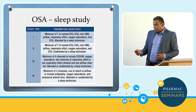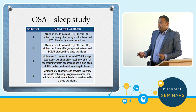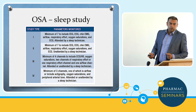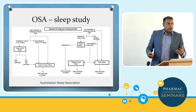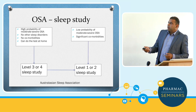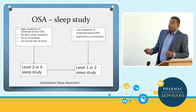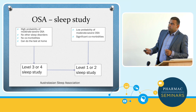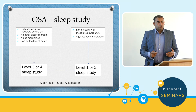Sleep study — we know about level one and level two studies, seven to ten channels typically done in the lab, and level three and four, which are done in the community — patients can do them at home. Looking at the Australasian Sleep Association algorithm, to simplify it: if someone has a high probability of moderate to severe OSA based on questionnaires and history, no cardiovascular problems or other comorbidities, no other sleep disorders, and they can do the test at home, then they can do a level three or four study, which increases the accessibility of sleep studies.